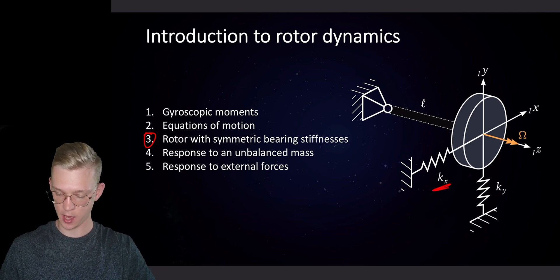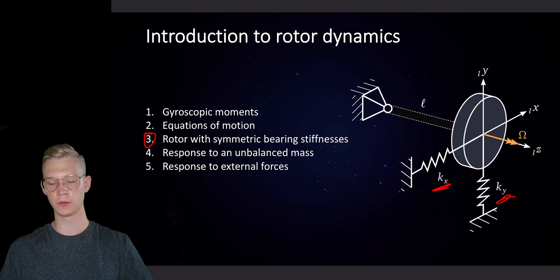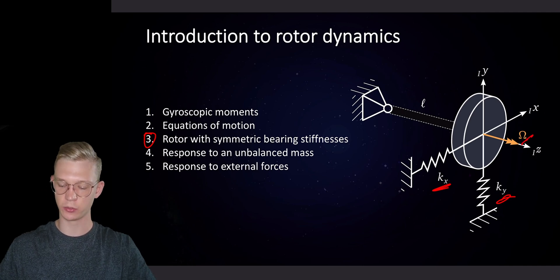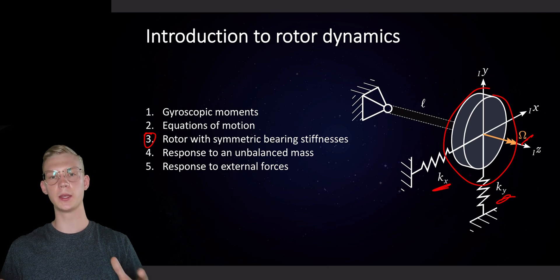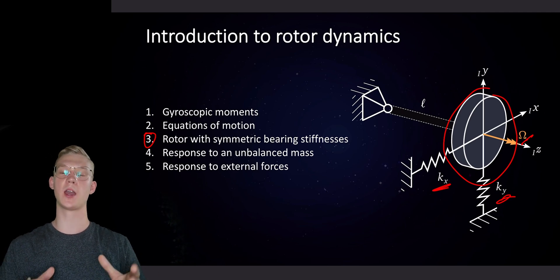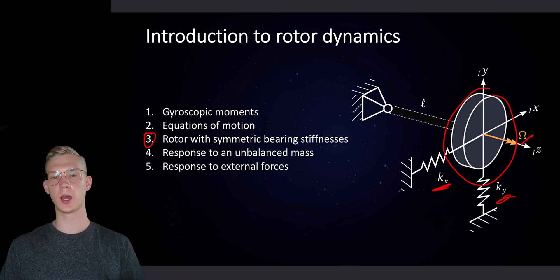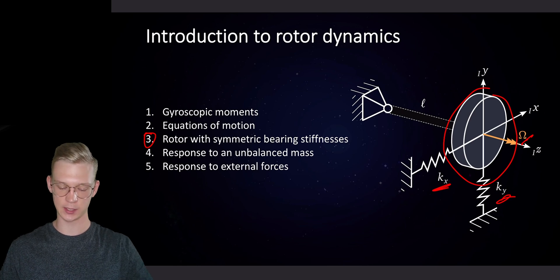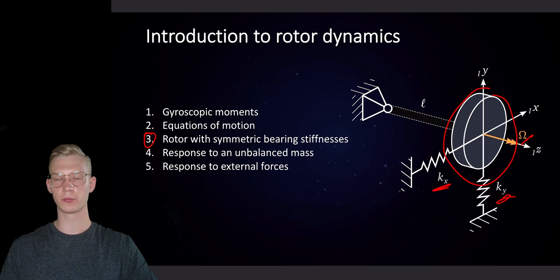So we have kx and ky, so this is our stiffness. We have omega as our rotation speed and this is our rotor. And now we would like to know what are the eigenfrequencies and what are the eigenvectors of that system and how do they change with rotation speed.